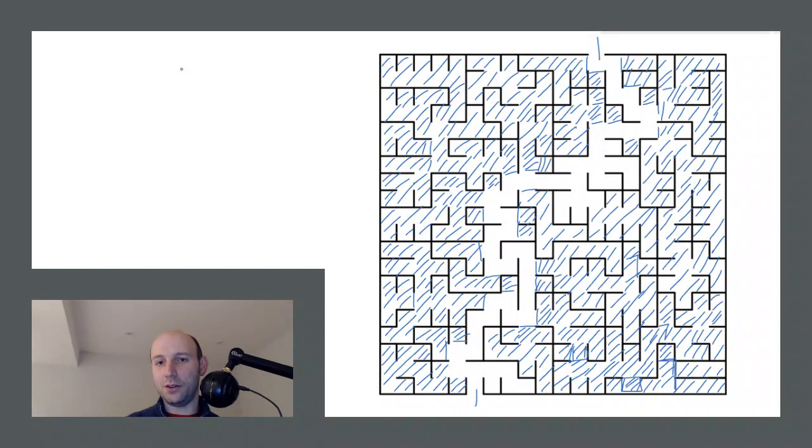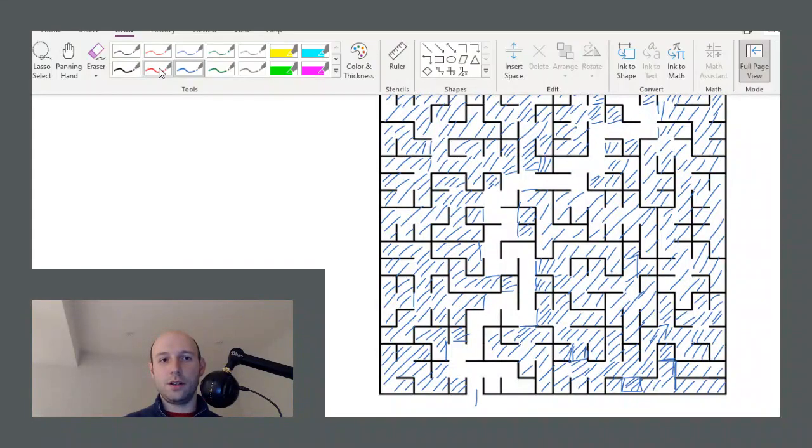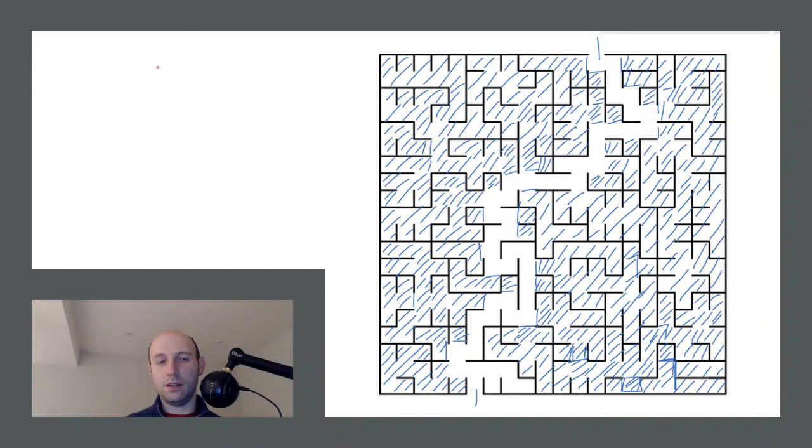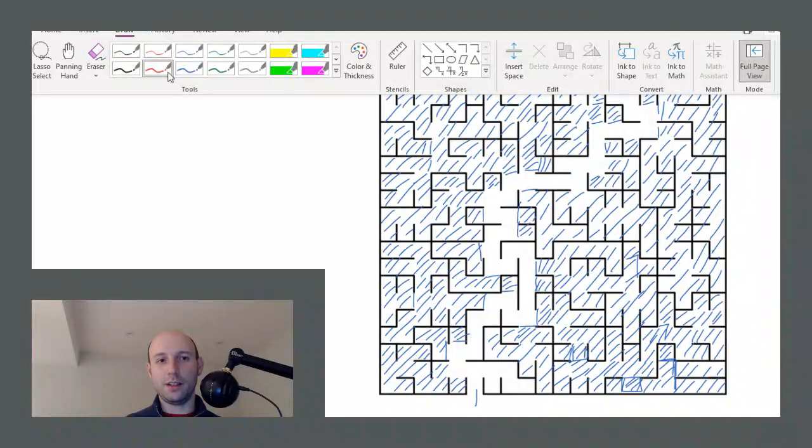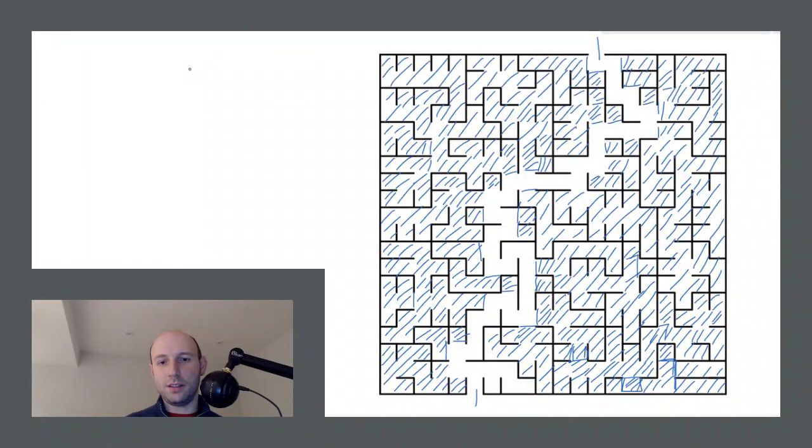We're pretty much done here. You can probably see the solution already. We've colored in all of the dead ends, the originals and the ones we've created, and now there's only one path left. You know what, there's one more dead end at the bottom. Not that it makes a difference, but I'll color that one in too.